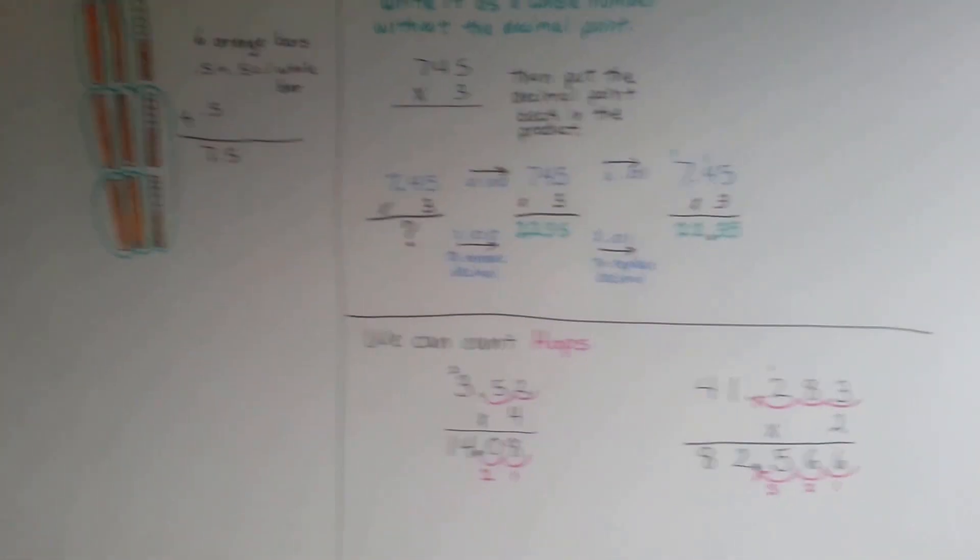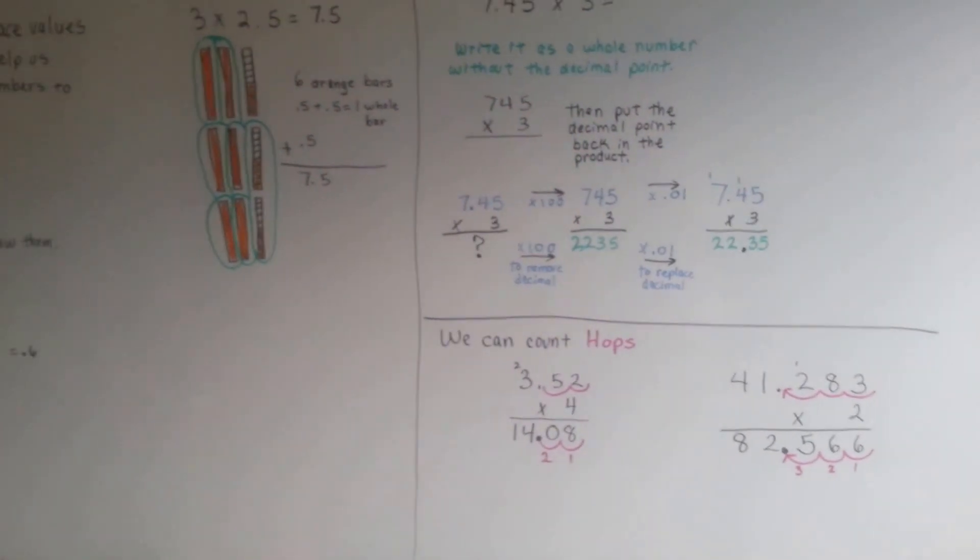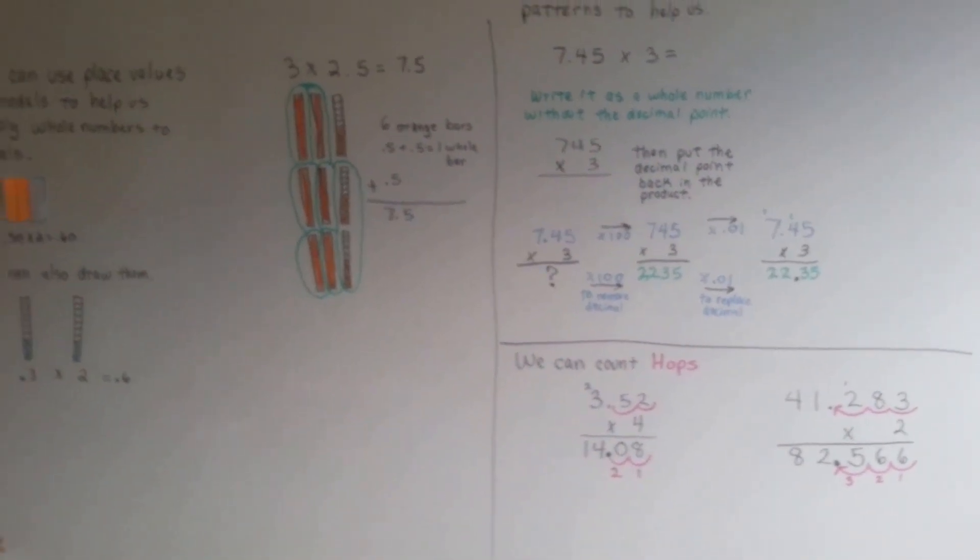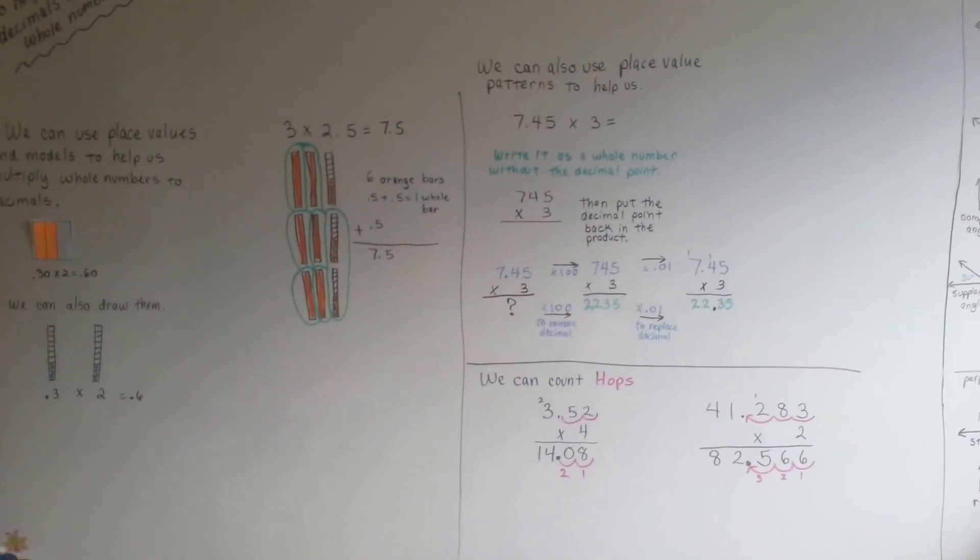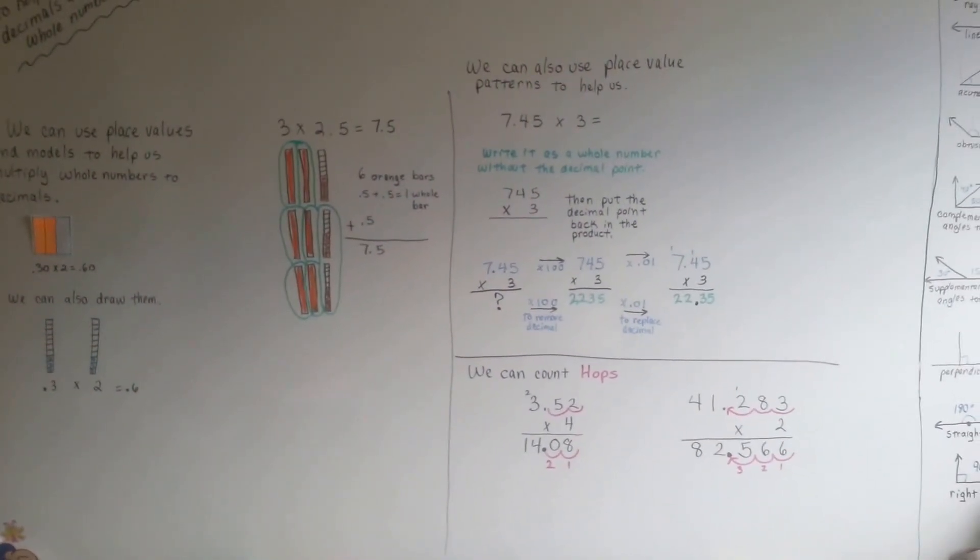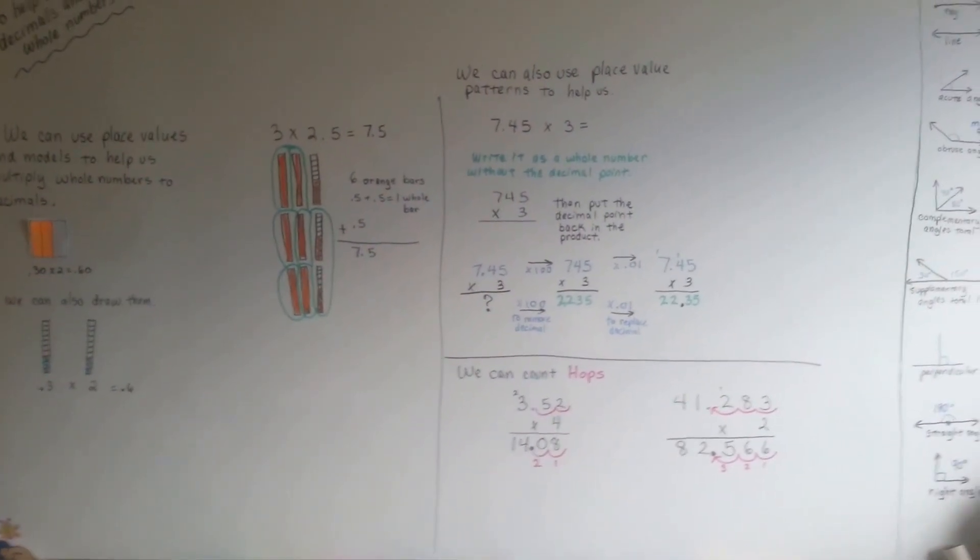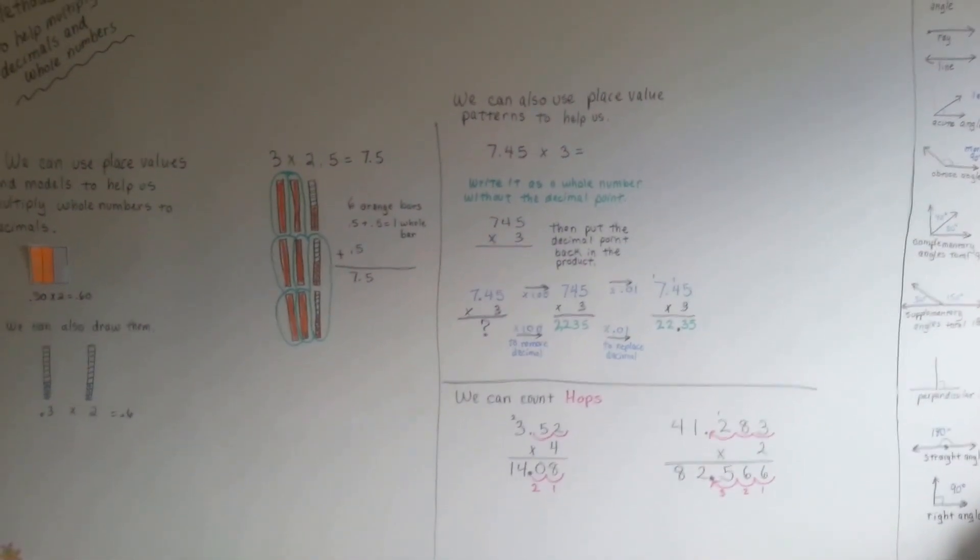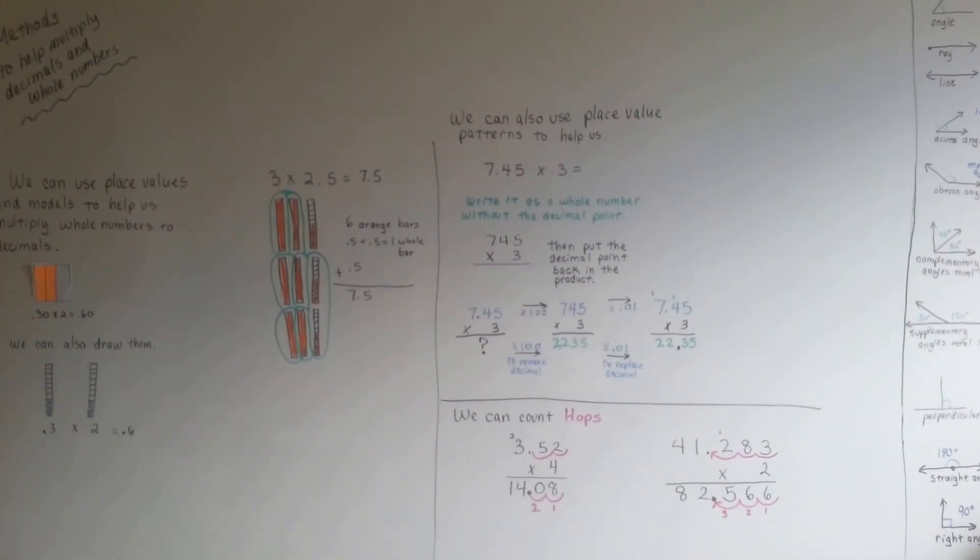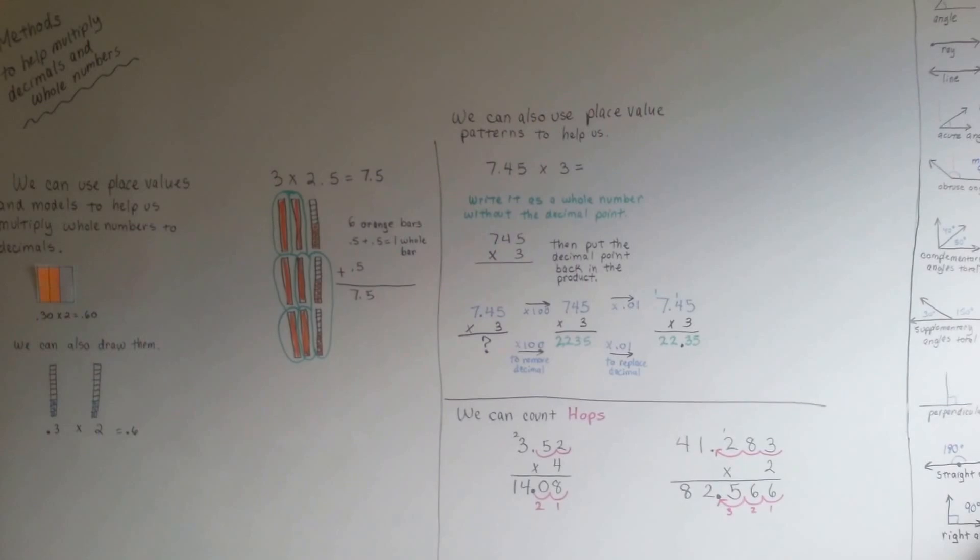So, those are some different methods to help multiply decimals and whole numbers, and you can try using them. And as you get better with your multiplication, you can eventually just count hops and go quicker, okay? I'll see you next video. We're going to keep talking about multiplying decimals. Bye.